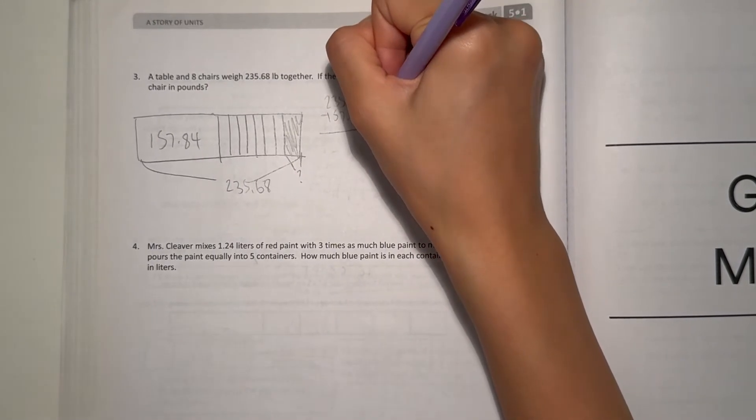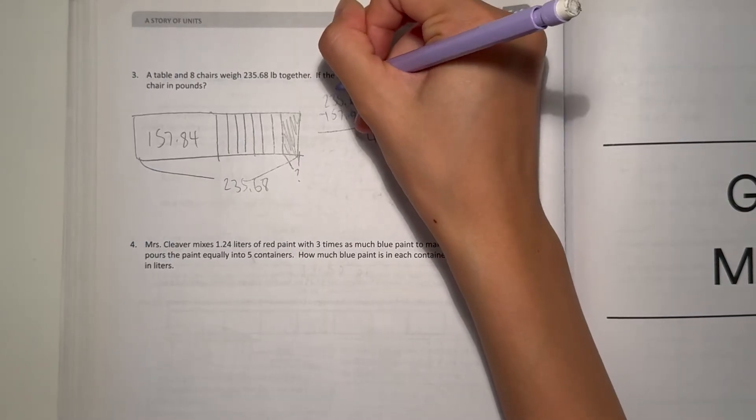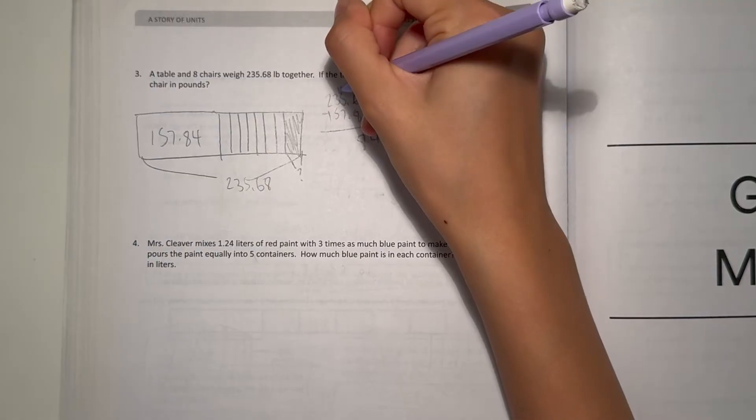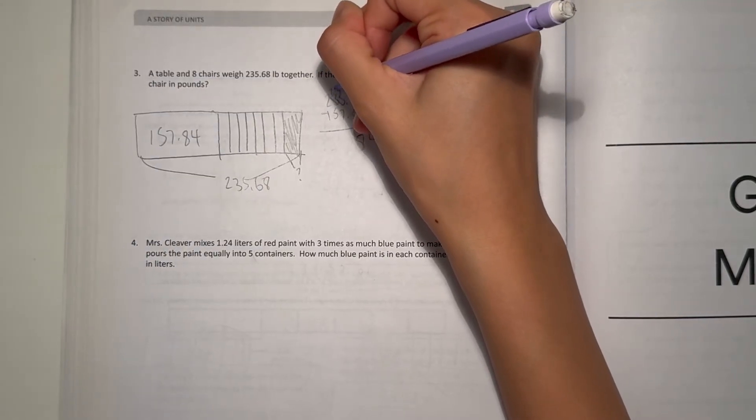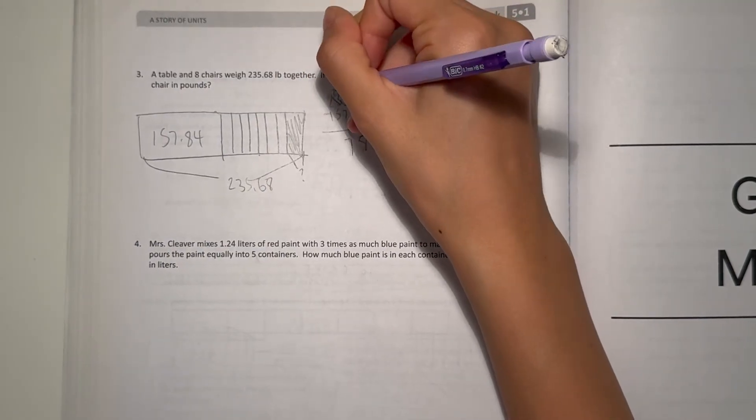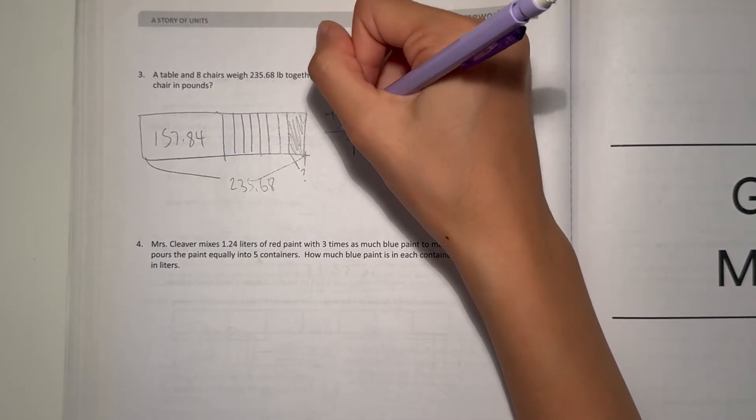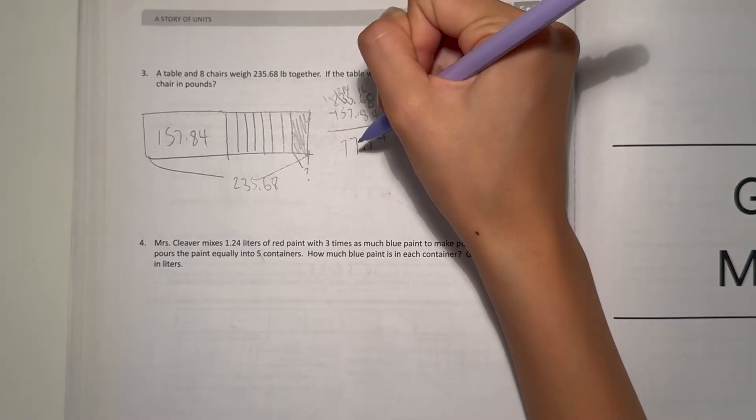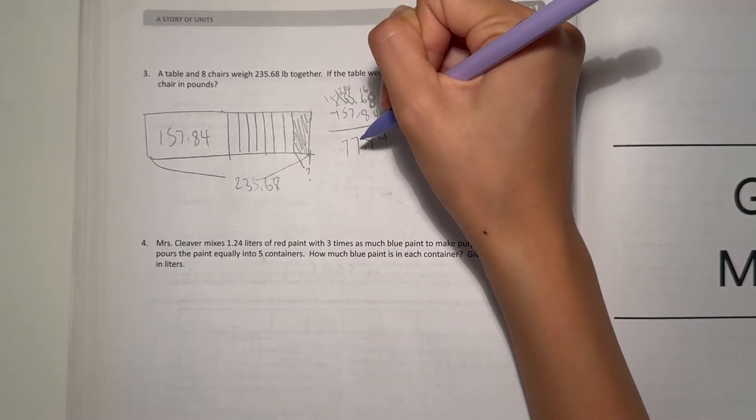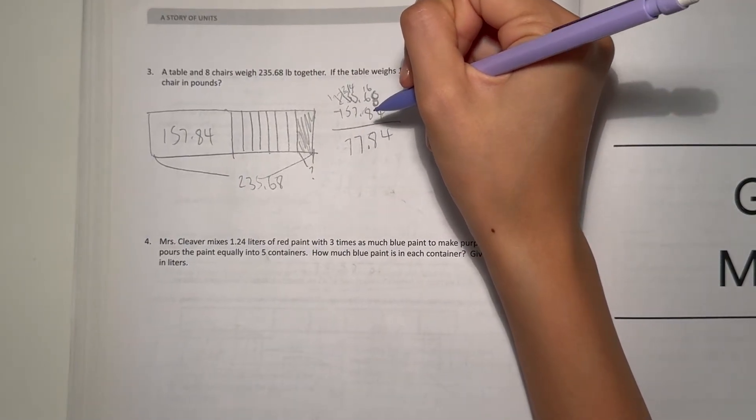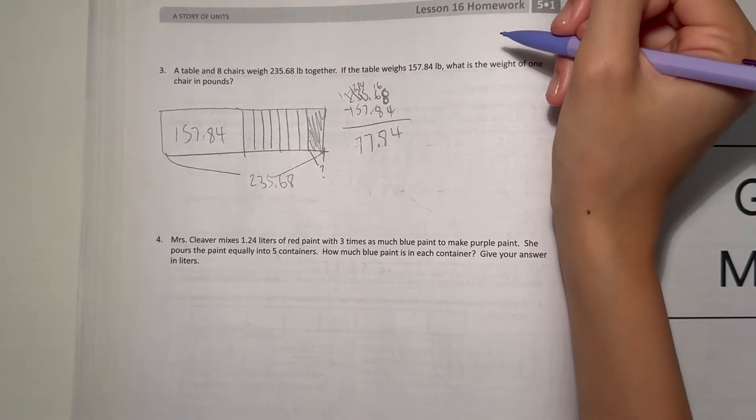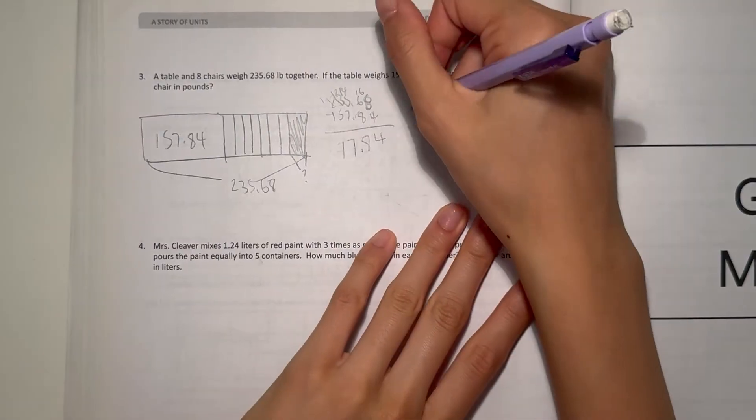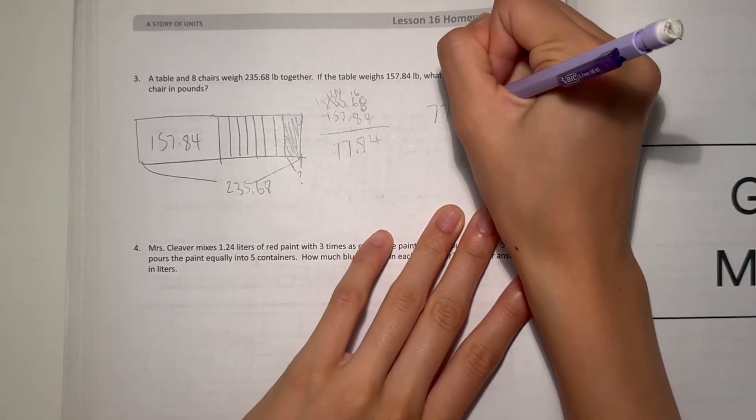8 minus 4 is 4, 6 minus 8 borrow 10, 16 minus 8 is 8, 4 minus 7, 14 minus 7 is 7, 12 minus 5 is 7, and 1 minus 1 is 0. So 77.84. So 77.84 is how much the chairs weigh, but now we have to find out how much each chair weighs. So 77.84 divided by 8.